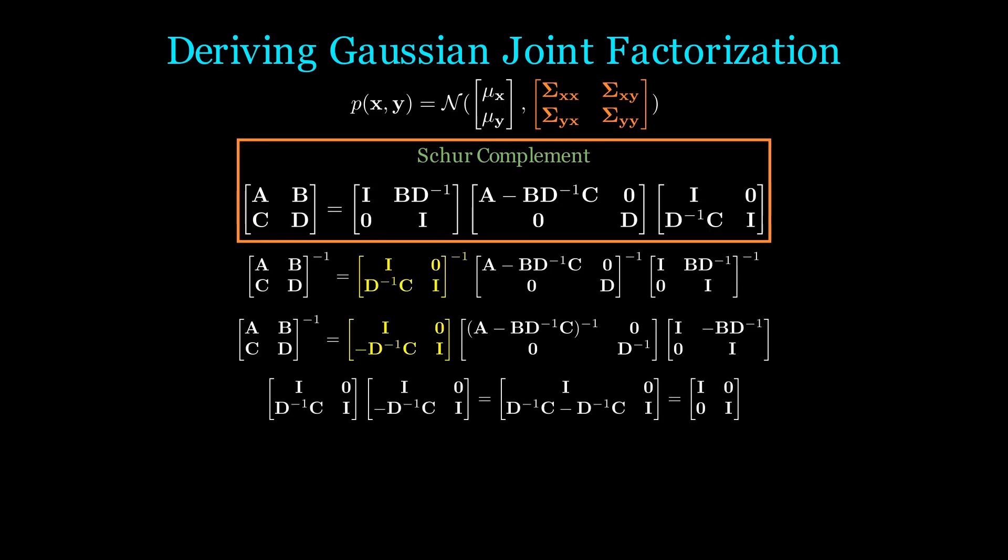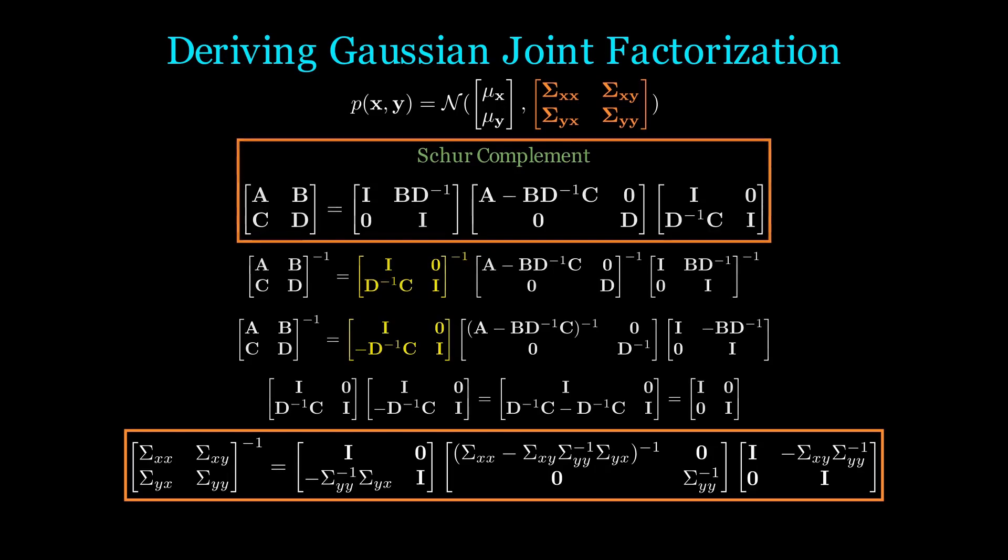For a sanity check, let's multiply the first matrix by its inverse to see that it does indeed result in the identity matrix. Hence, using this formula, we can directly write out what Σ^{-1} is.